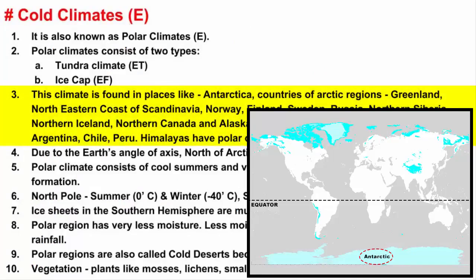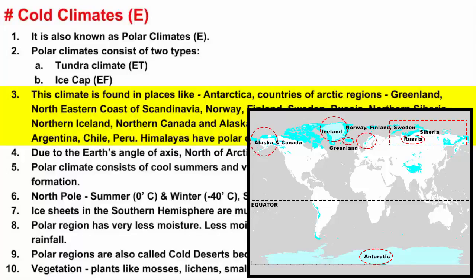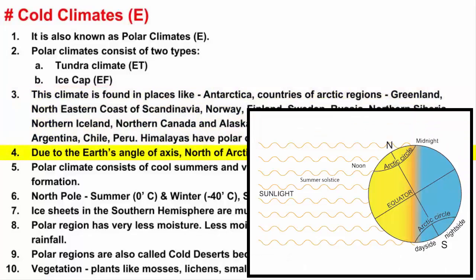Polar Climates are found in Antarctica, countries of the Arctic region like Greenland, the extreme north-eastern coast of Scandinavia — Norway, Finland, Sweden — Russia, large areas of Northern Siberia, Northern Iceland, and northern parts of Canada and Alaska. In South America, southern parts of Argentina, Chile, and Peru have Polar Climates. Even the Himalayas have Polar Climates.